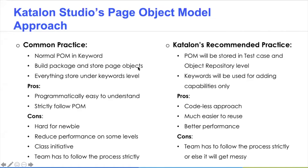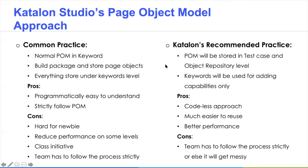Storing everything under the keyword level has some advantages: it's programmatically easy to understand if you are a programmer or a senior QA engineer, and it strictly follows the Page Object Model if you're coming to Katalon Studio from another framework using Selenium. But there are a lot of disadvantages. It's going to be hard for newcomers — fresh QA engineers joining your project — to understand what is really going on under the hood. It also reduces performance to some level when calling from the custom keyword level; it's a little bit slower than calling using test cases.